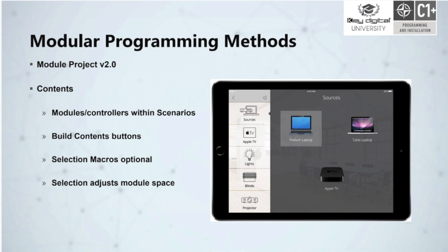Adding contents within a scenario is again just building those buttons and defining the properties. Should events and actions occur? Should a selection macro occur when I press these buttons on the left? Perhaps yes, perhaps no. We have full flexibility with each and every contents button to define whether we would or would not like events and actions to occur, and if we do, we can define what all those events and actions — consisting of our macro — should be. By pressing one of those contents, it will adjust the module space, which is the larger area in dark gray.